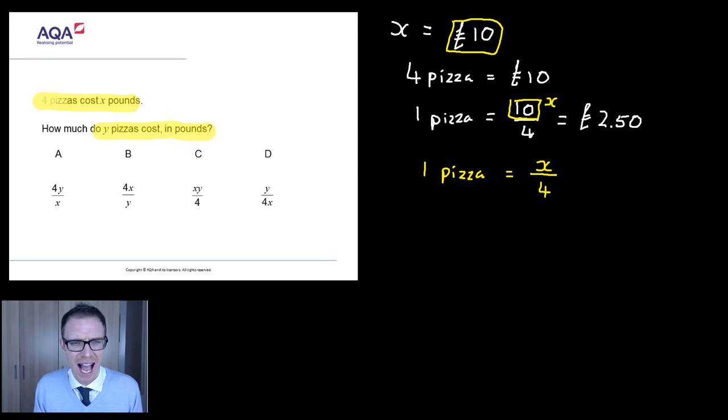And now the question says how much does y pizzas cost in pounds? Well let's do something similar. Let's imagine we wanted to know the price of six pizzas. Well if we knew that one pizza was two pound fifty and we wanted to know what six pizzas were, we just do six times two pound fifty. And we get our answer which if my maths is right is maybe fifteen quid.